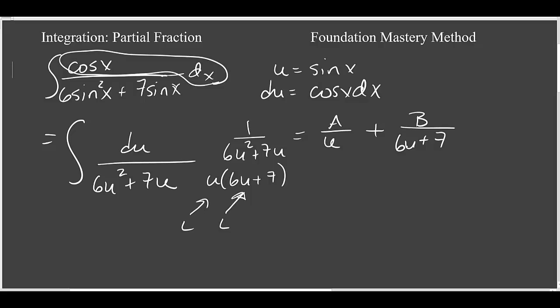Now if we put both of these over a common denominator, that common denominator will be u times 6u plus 7, and we'll have a times 6u plus 7 in the numerator, plus b times u.